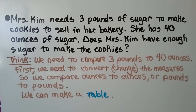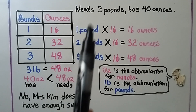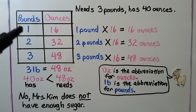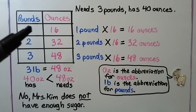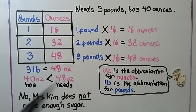First we need to convert — that means change the measures so we compare ounces to ounces or pounds to pounds. We make a table: she needs three pounds and she has 40 ounces. One pound is equal to 16 ounces, so one pound times 16 equals 16 ounces.